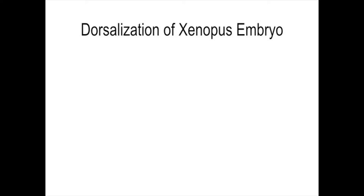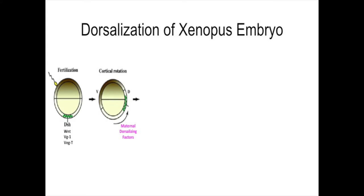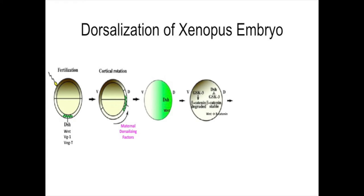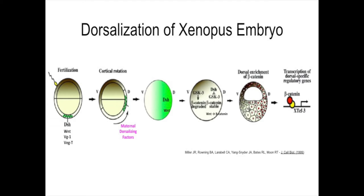How does cortical rotation play a role in the dorsalization of the embryo? The sperm enters the animal pole of the Xenopus embryo. The vegetal pole contains maternal dorsalizing factors such as the protein disheveled and the mRNA that codes for Wnt, Vg1, and VegT. Cortical rotation causes these maternal dorsalizing factors to move away from the sperm entry point, resulting in greater concentration of disheveled and Wnt. Disheveled stabilizes beta-catenin by inhibiting GSK3-beta, and the Wnt ligand promotes beta-catenin, resulting in dorsal enrichment of beta-catenin. Beta-catenin then plays a role in the transcription of dorsal-specific regulatory genes.